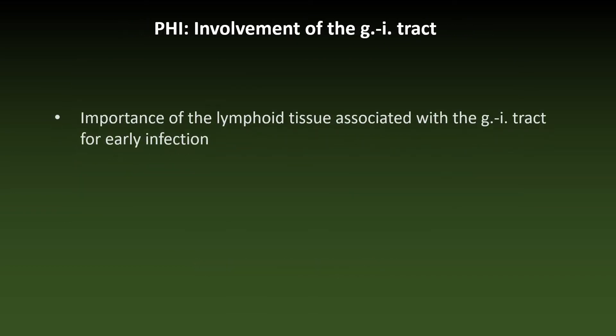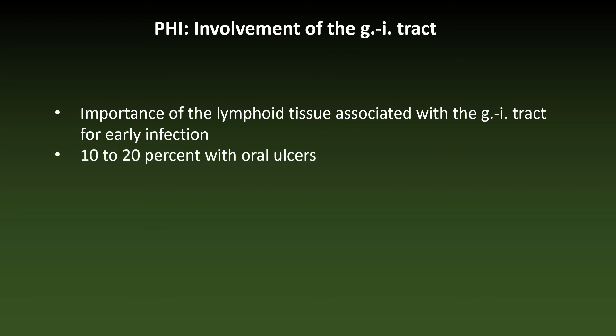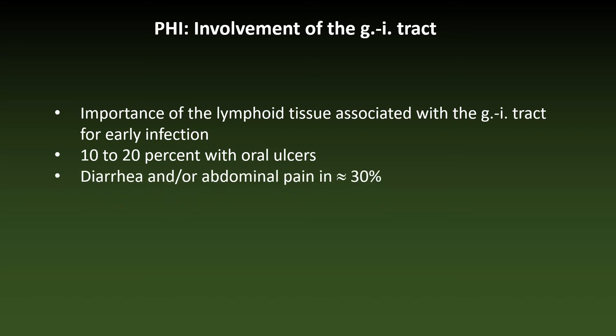Experimental infections with the simian immunodeficiency virus, simian-human hybrid viruses, and human patients with biopsies have shown the importance of the lymphoid tissue associated with the GI tract for early infection. Some 10 to 20% of patients with PHI have oral ulcers, and while usually apparent, involvement of the entire GI tract is possible, with diarrhea and abdominal pain frequently observed. The next patient illustrates involvement of the gastrointestinal tract during PHI.